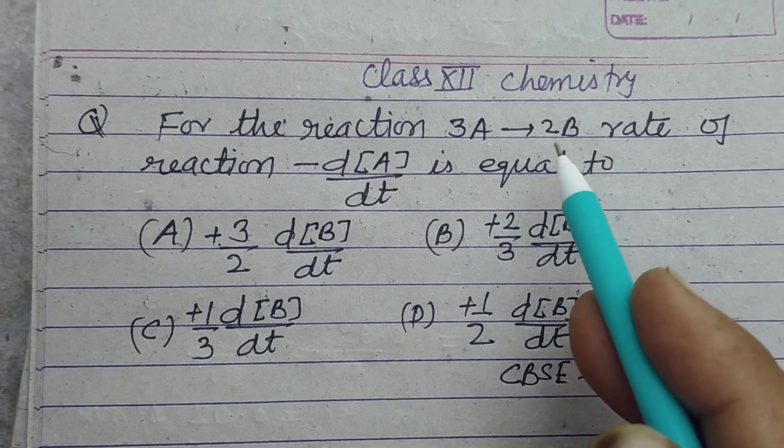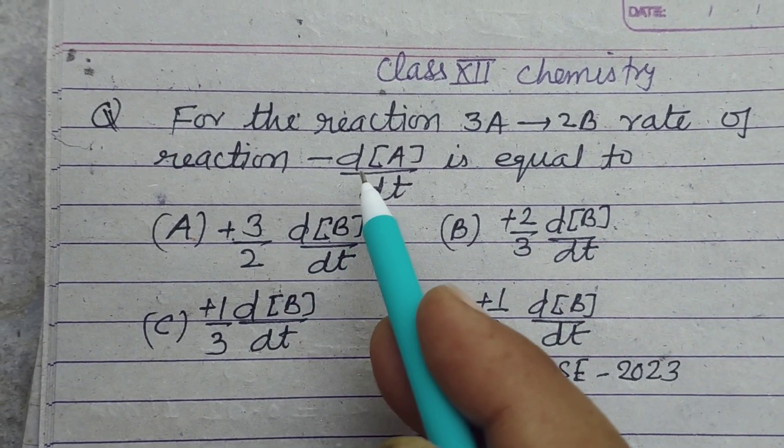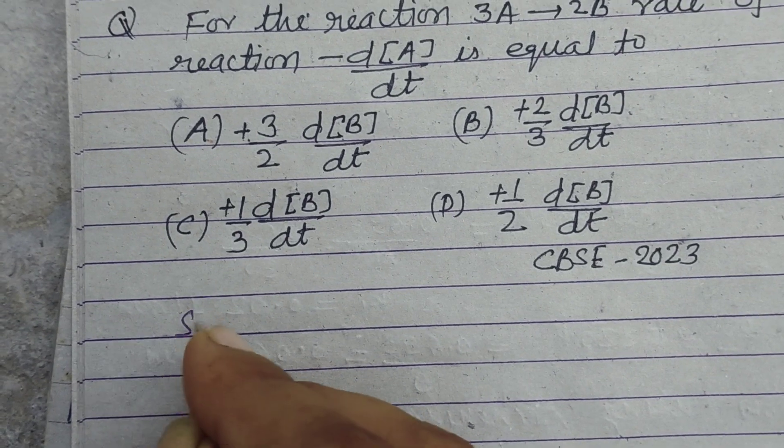For the reaction 3A gave rise to 2B, rate of reaction minus dA upon dt is equal to what? So student,